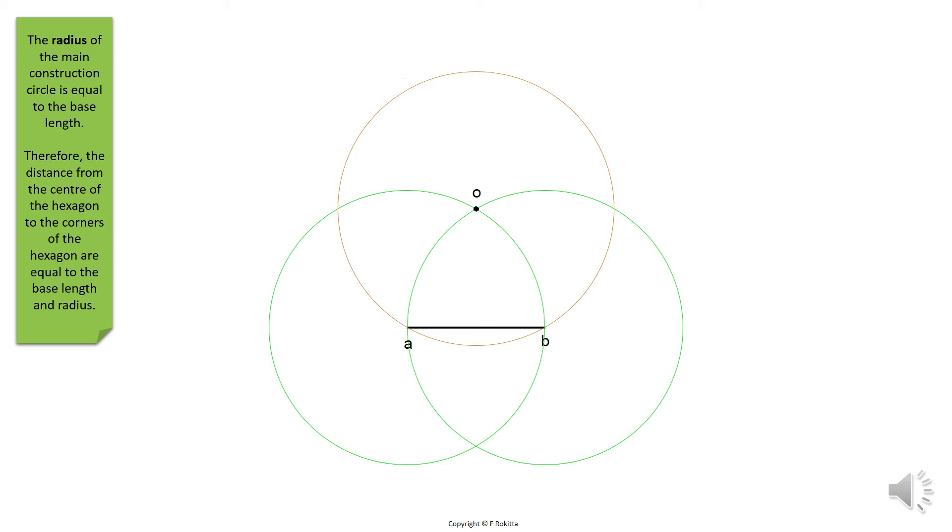The radius of the main construction circle is equal to the base length, and therefore the distance from the center of the hexagon to the corners of the hexagon are equal to the base length and radius. Now you have created two intersections on the right and left of the main construction circles, and we call this C and F.